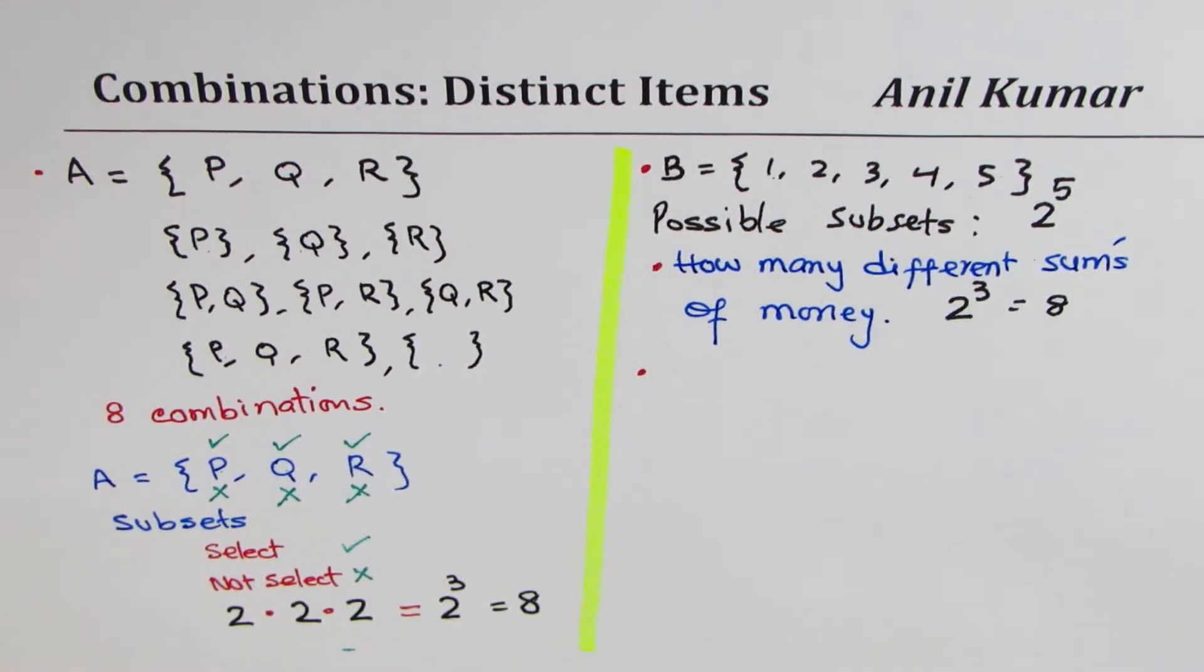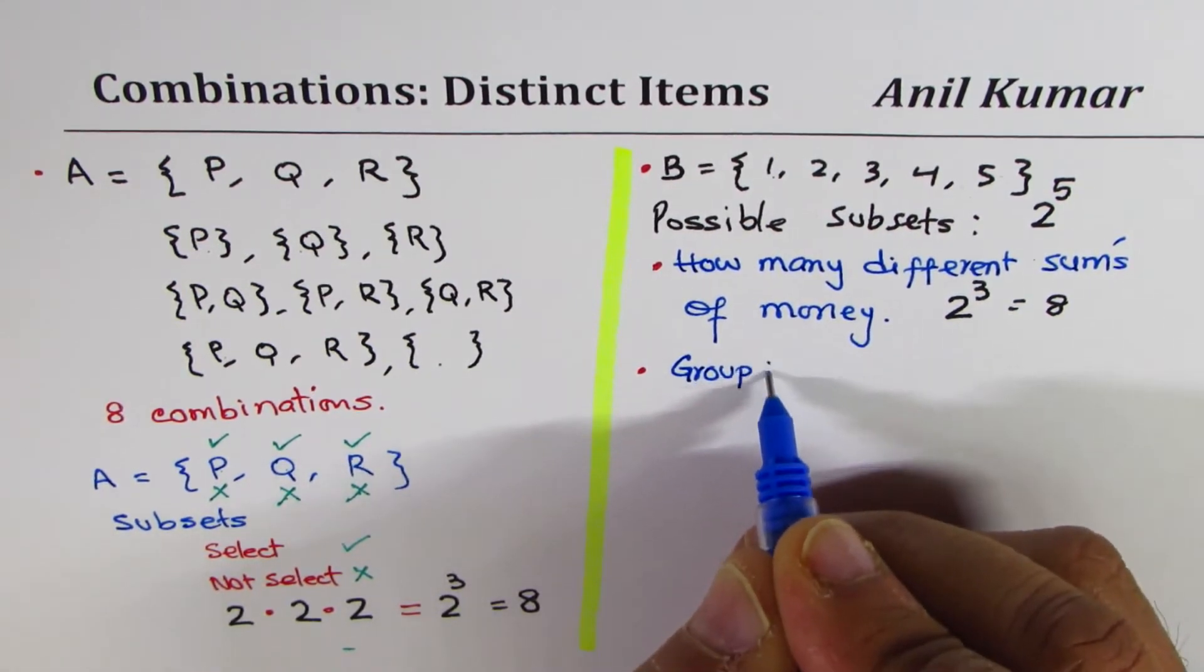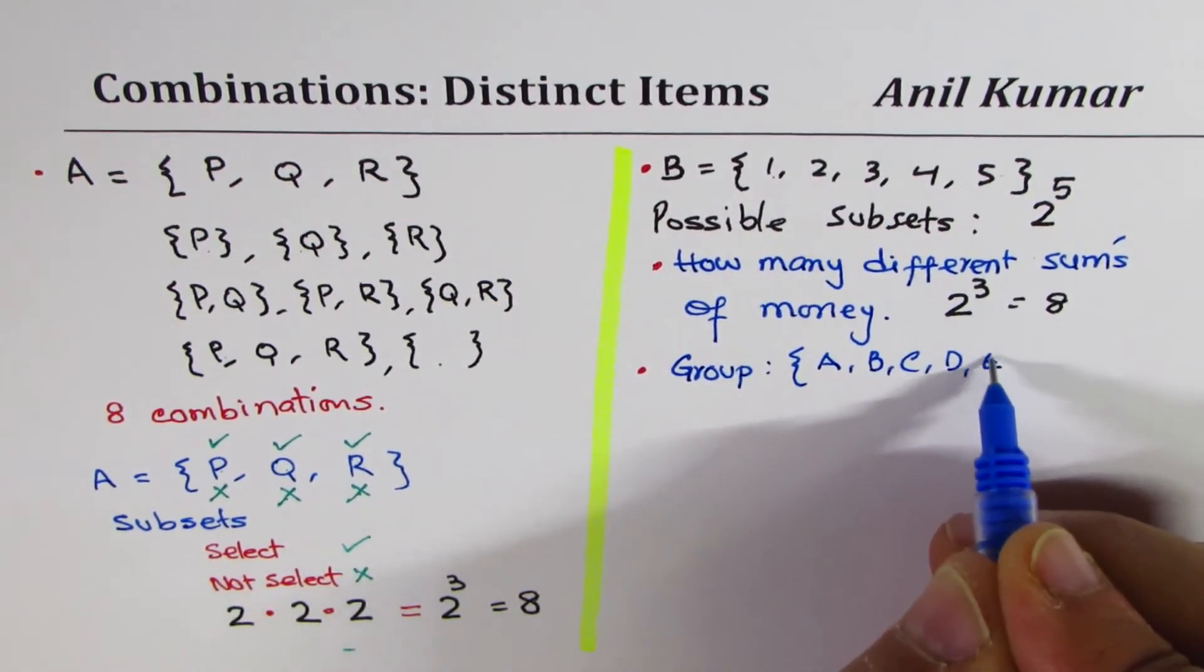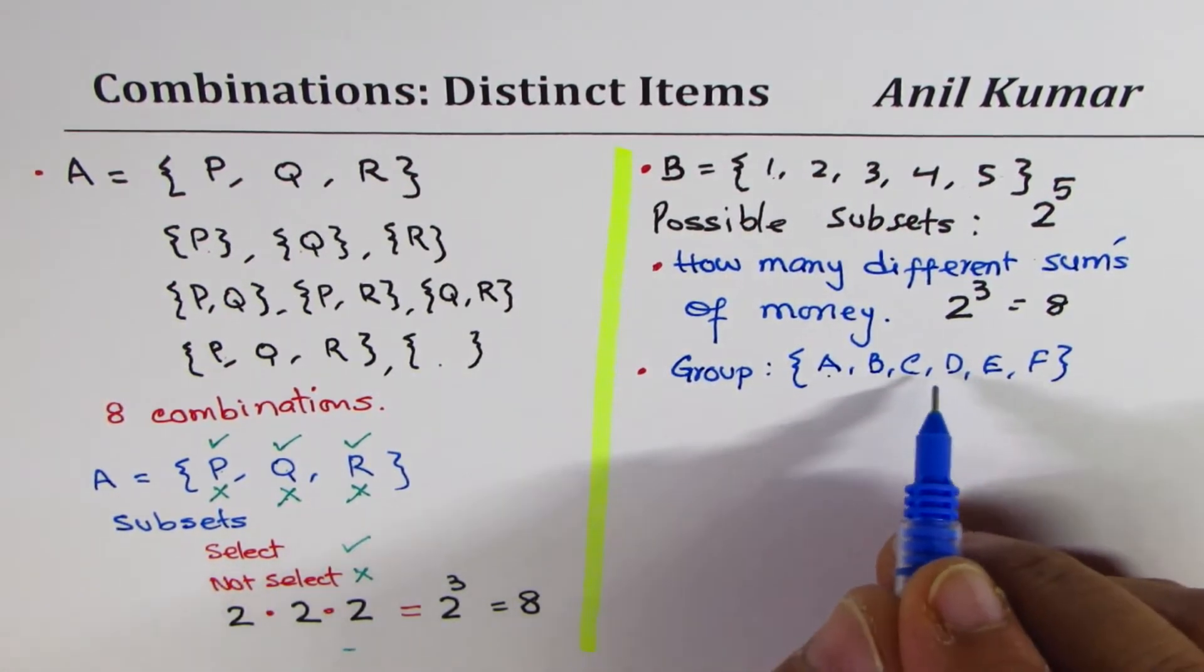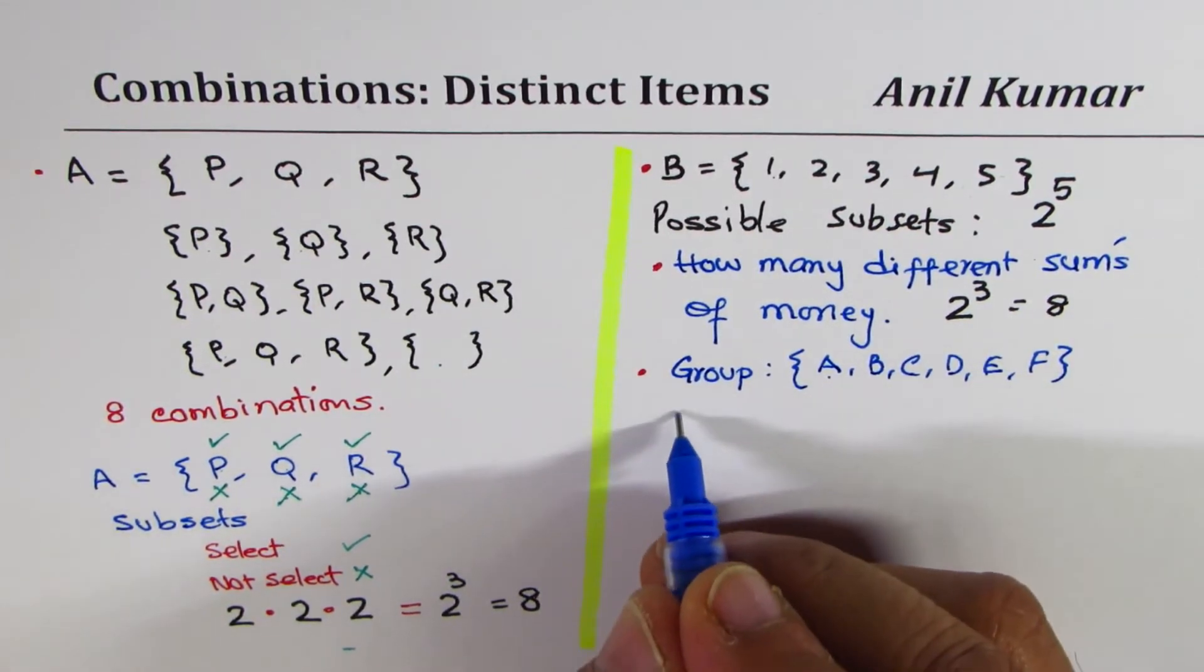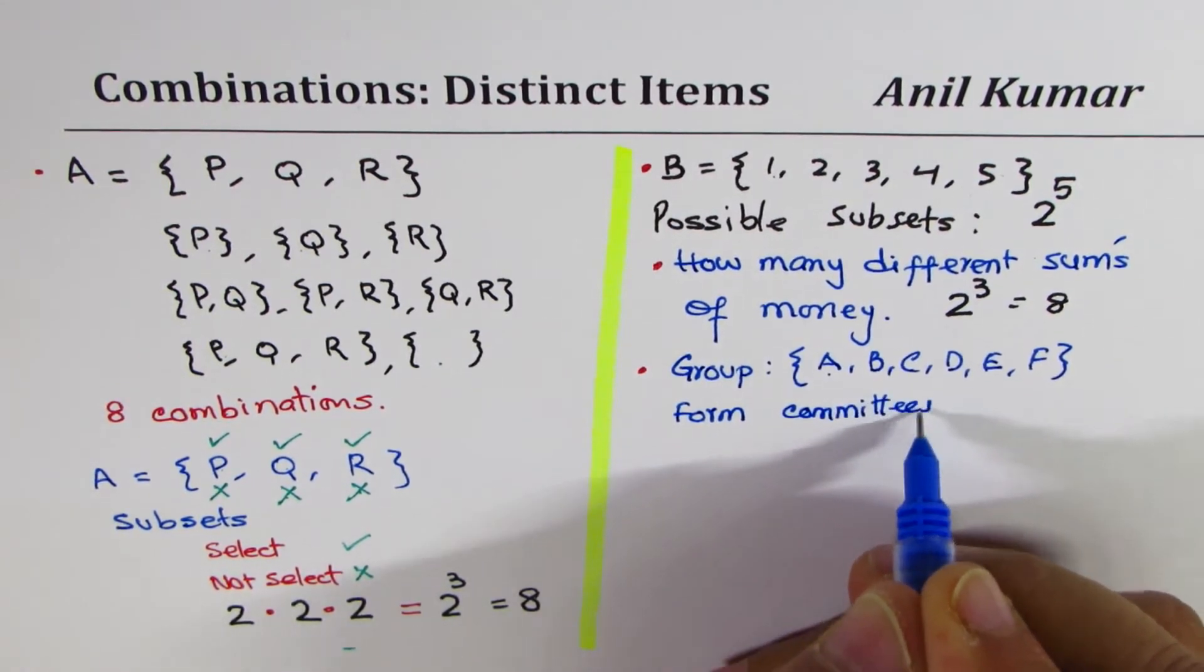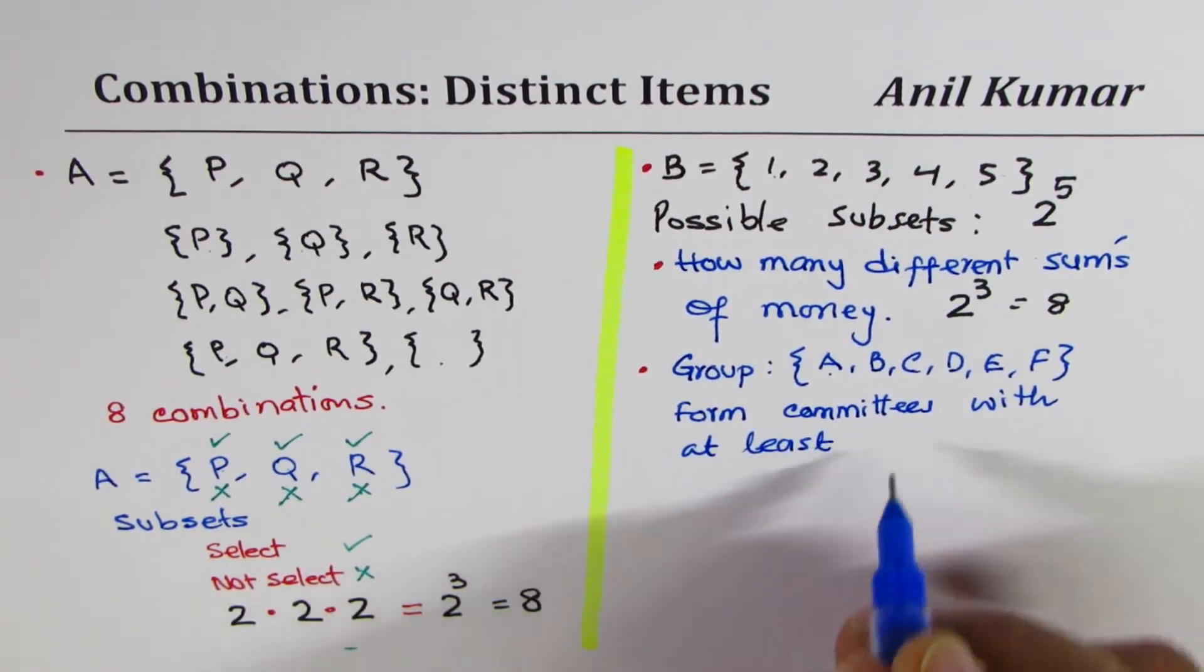So now let's move on to the other types of examples which you might see under this heading. One of the very popular examples is selecting members of a committee. So let's say we have a group. Let's say we have a group which has these people. A, B, C, D, E, F. So these are 1, 2, 3, 4, 5, 6 persons. These are 6 persons. So we have to form committees with at least, so we need to form committees with at least one member.